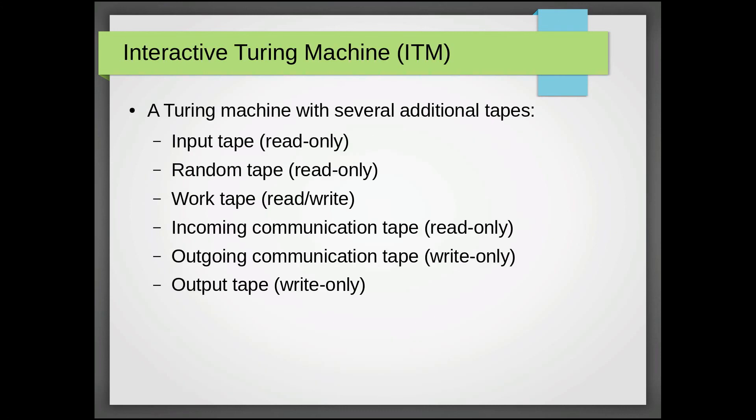So the special Turing machine I was just talking about is the interactive Turing machine, or ITM. This Turing machine is basically a standard Turing machine, but with a few extra tapes. The first tape is an input tape which is read-only. The second tape is a random tape.